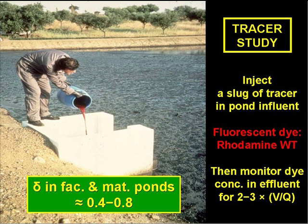Tracer studies are done like this. At t equals zero, a concentrated slug of the tracer, usually a dye such as Rhodamine WT, is poured into the pond, as shown on the slide for the full-scale facultative pond at Vidigera in Portugal. Then the concentration of the dye in the effluent is measured for 2 to 3 V over Q retention times. The results can then be fed into a computer program to calculate delta.